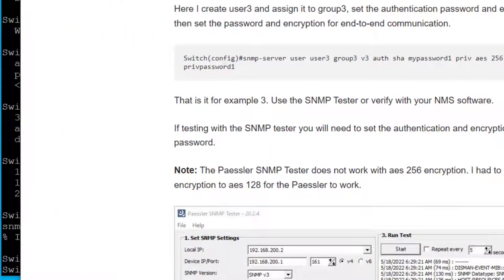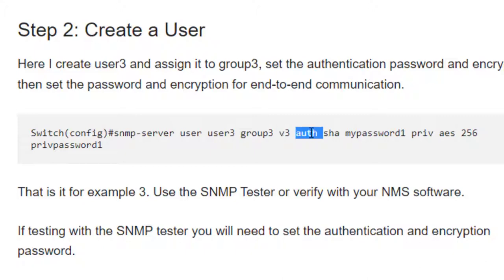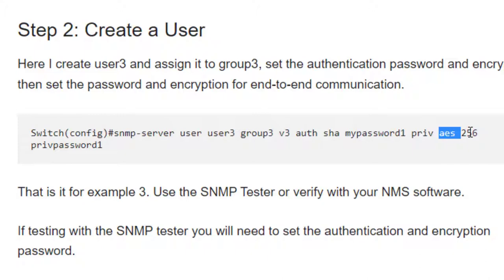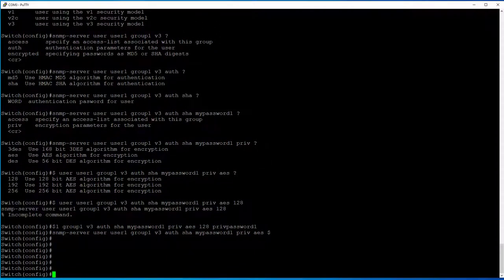That was a long command — let me pull it up. This is on my website. You create a user, assign it to a group, set the SNMP version, set the authentication parameters using the 'auth' command, specify the encryption algorithm and password, then use the 'priv' command to set the encryption type, encryption bits, and your privilege password. That's really it — SNMP is now configured.